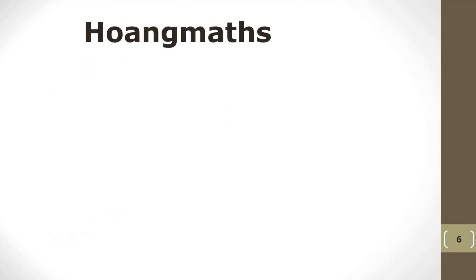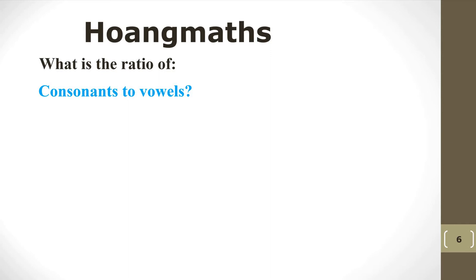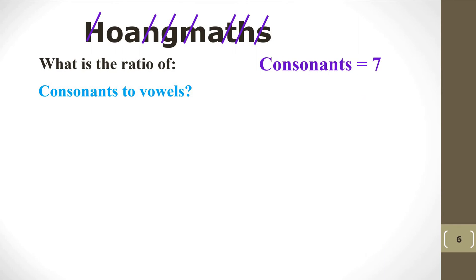Let's look at the name 'Hoang Mats'. What is the ratio of consonants to vowels? First, count the consonants: H, N, G, M, T, H, S — that gives 7 consonants. The vowels are O, A, A — so 3 vowels altogether. Therefore the ratio of consonants to vowels is 7 to 3.